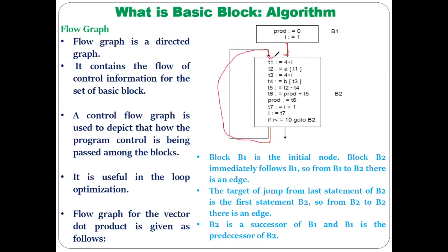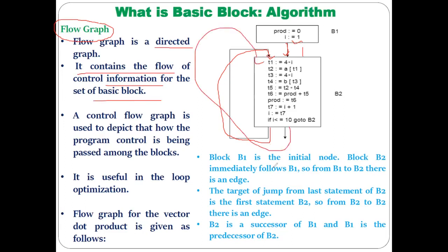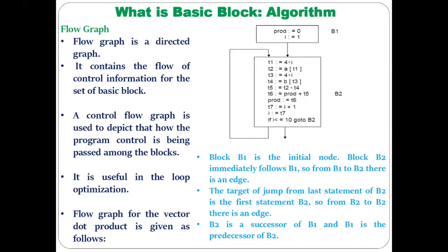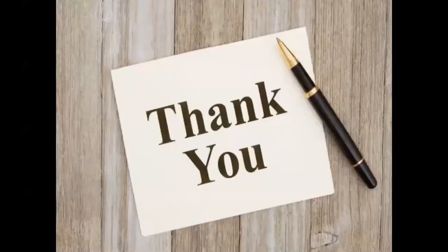So control goes from B1 to B2, and then from B2 again back to B2 — that particular flow of control is easily shown using the flow graph data structure. B2 is the successor of B1 and B1 is the predecessor of B2. The direction is shown with arrows, which is why it is called a directed graph. You can go through this lecture again, and if you have doubts you can ask in the comment section. Thank you.